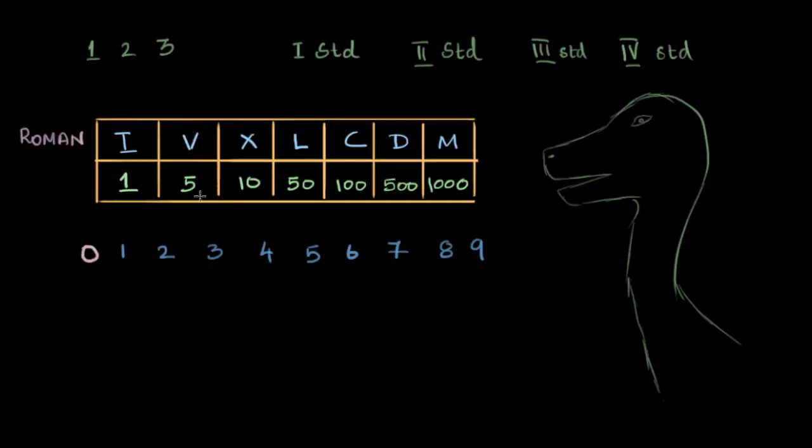And then they had a symbol V for 5, X for 10, L for 50, and C for 100. And this is probably enough if you know these. And if you're interested, then there's D and this LCD always sticks out to me. D is for 500 and M is for 1000.